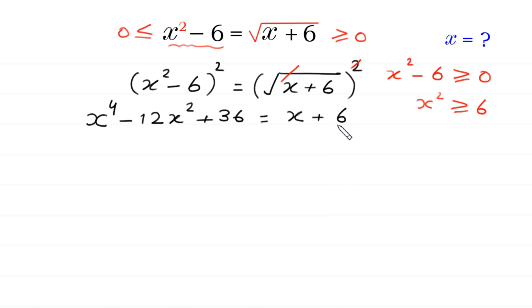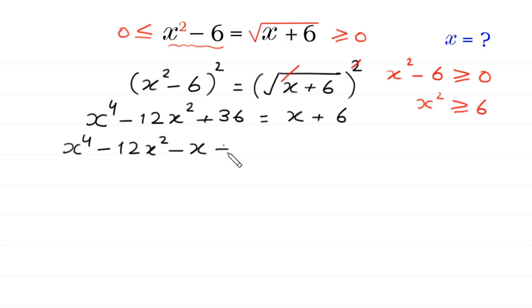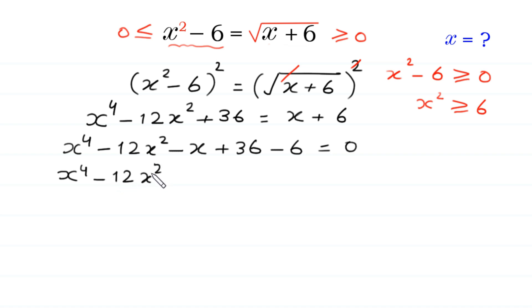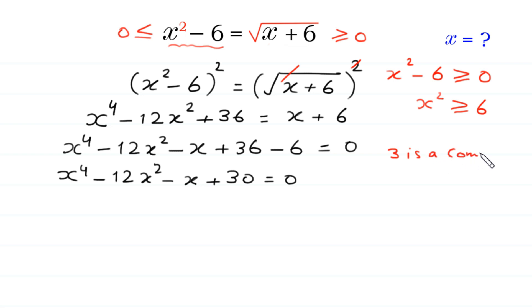Now we move x and plus 6 to the left side: x to the power 4 minus 12x squared, this positive x becomes negative x, plus 36, and this positive 6 becomes negative 6 at the left side, equal to 0. So x to the power 4 minus 12x squared minus x plus 36 minus 6, giving plus 30, is equal to 0. Because 3 is a common factor of 3, 9, and 30.